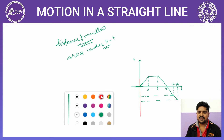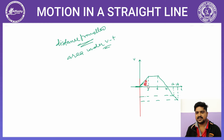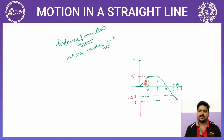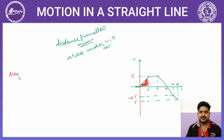सबसे पहले पहले triangle का area निकालते हैं। Graph में height 5 दिया गया है और नीचे minus 2.5 है। पहले triangle का area = half into base into height = 1/2 × 2 × 5 = 10 होगा।